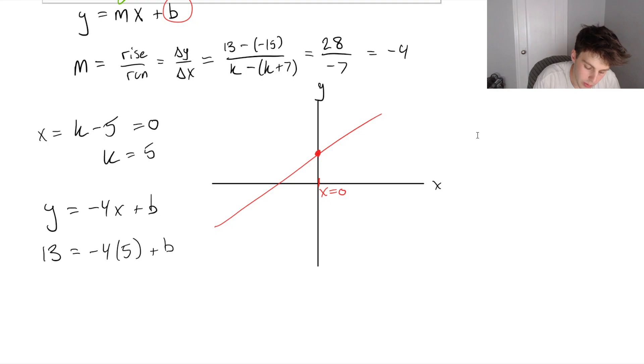So we get minus 20 on our right-hand side. If we move that over, we get 13 plus 20 equals b, or 33 is equal to b.